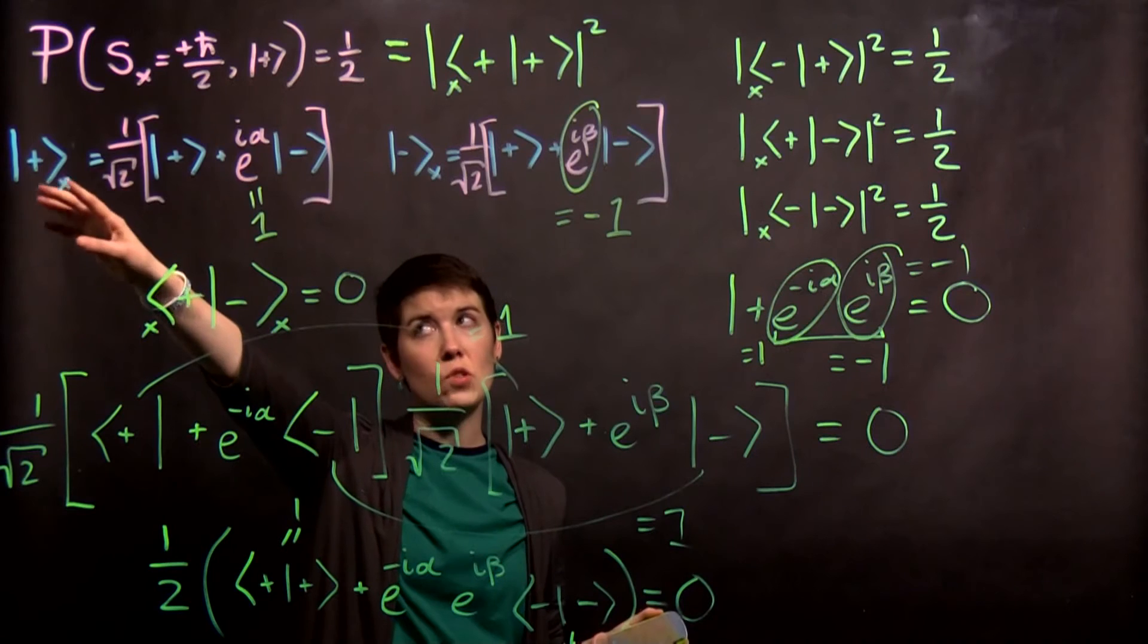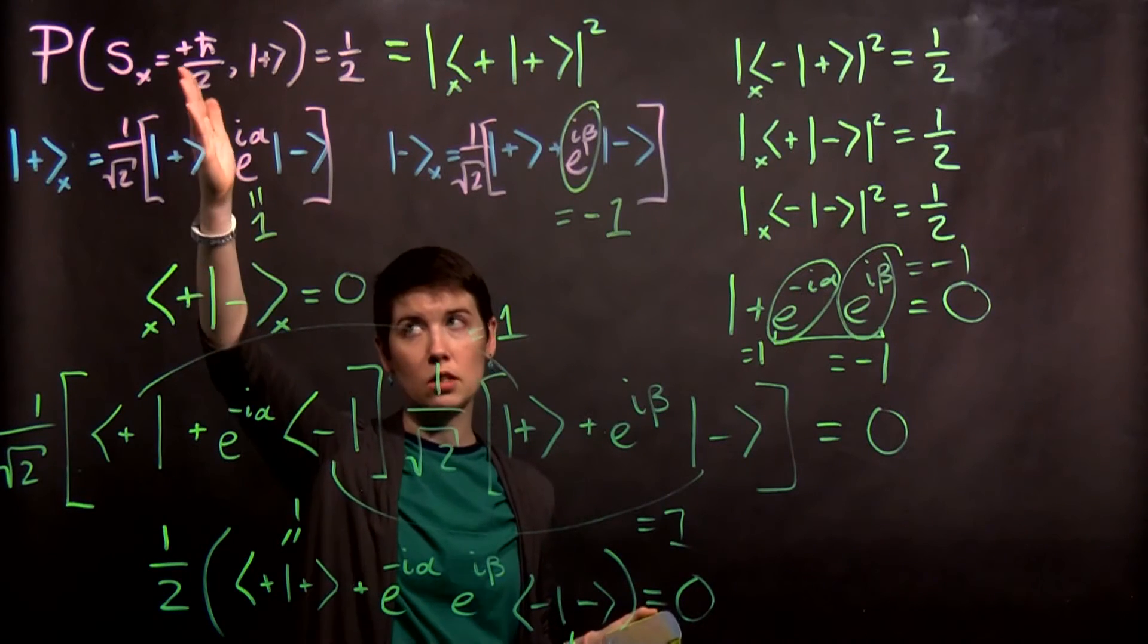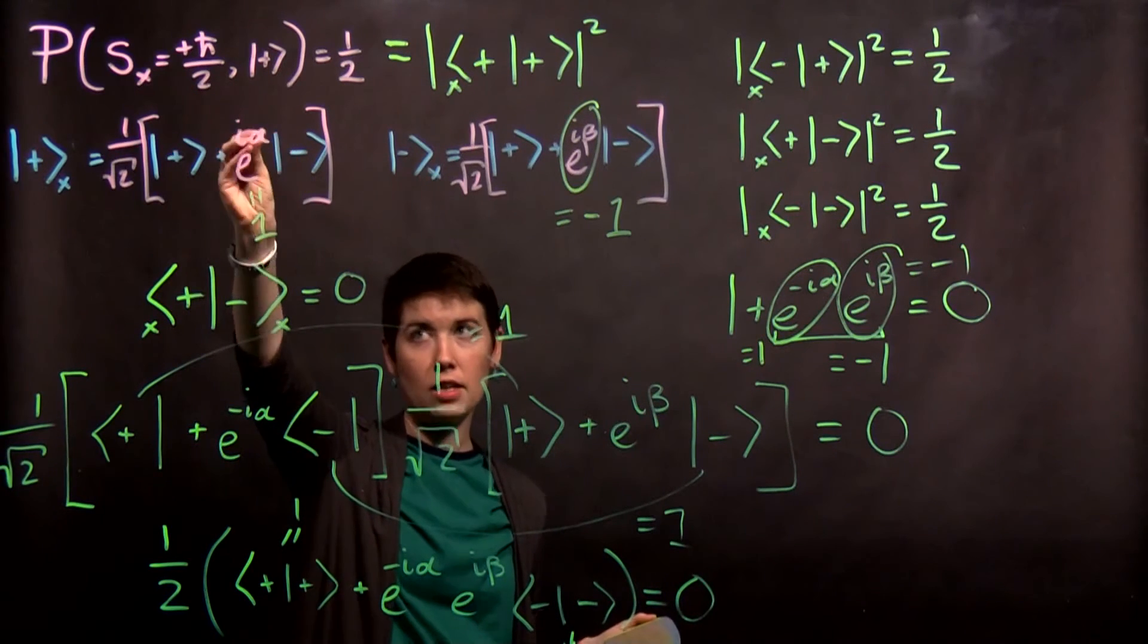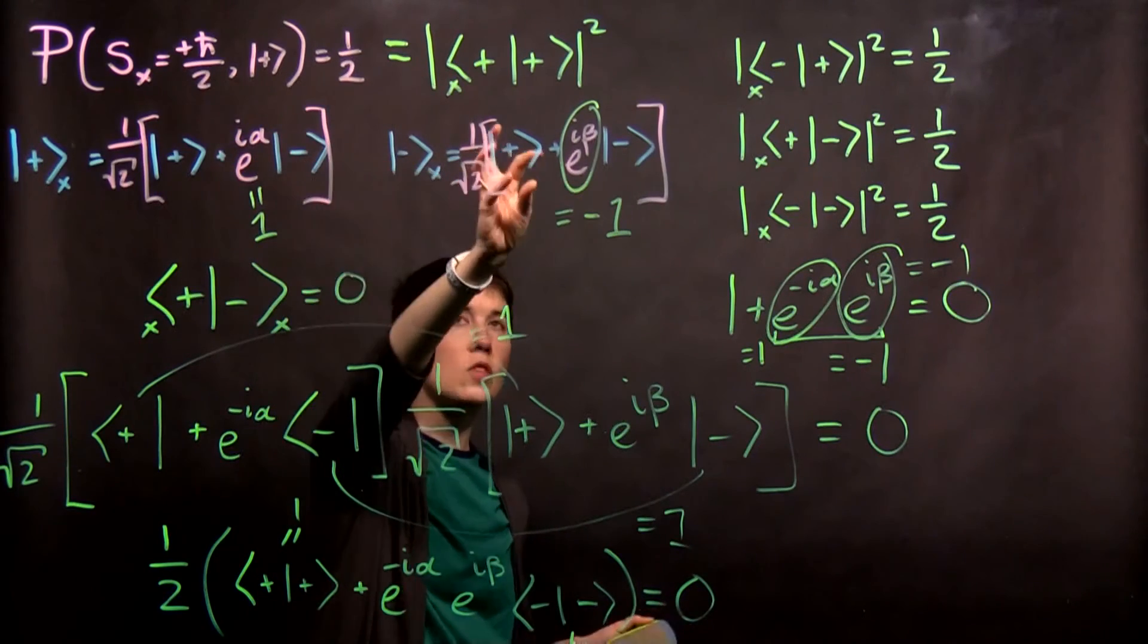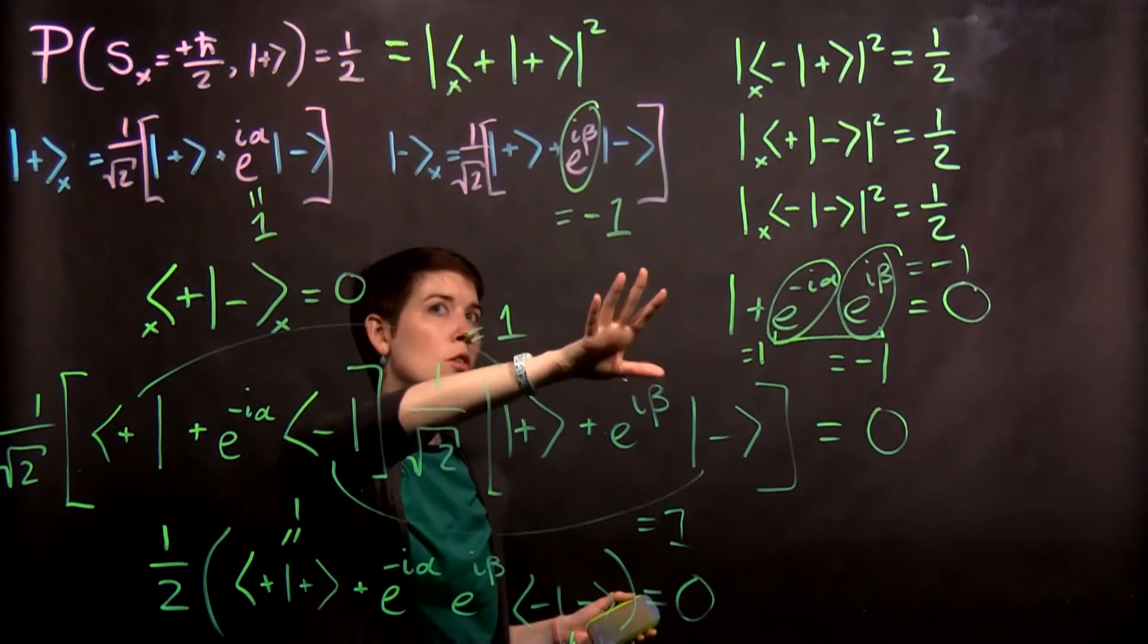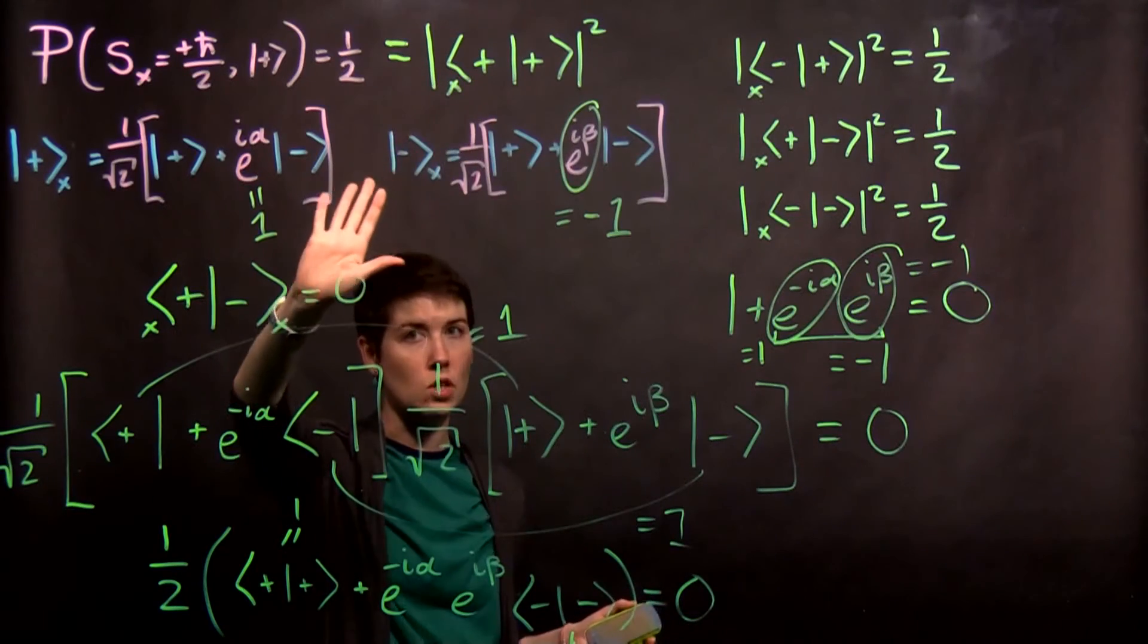And so with this convention, our spin up in x state is going to be basically plus added to spin, so spin up plus spin down. But then this is spin up minus spin down with this 1 over square root of 2 for normalization.